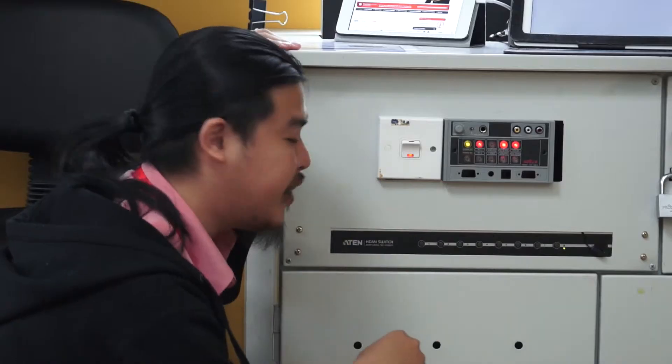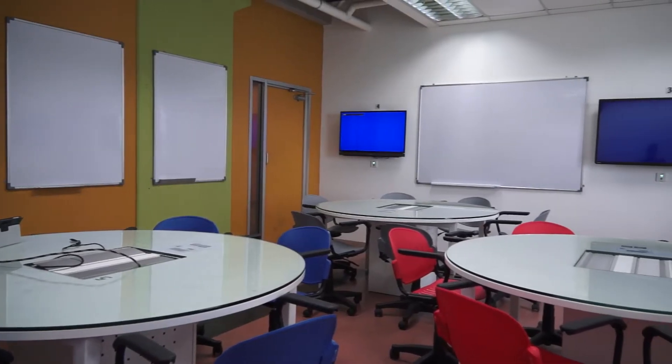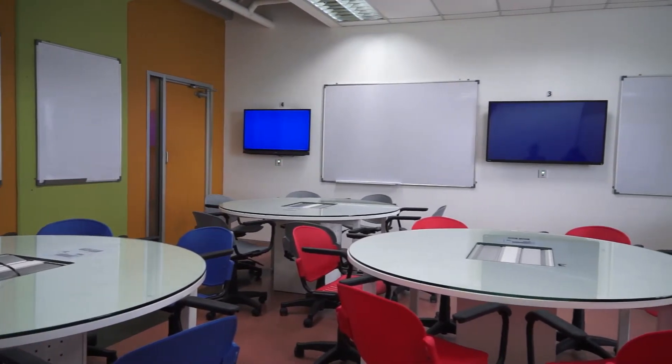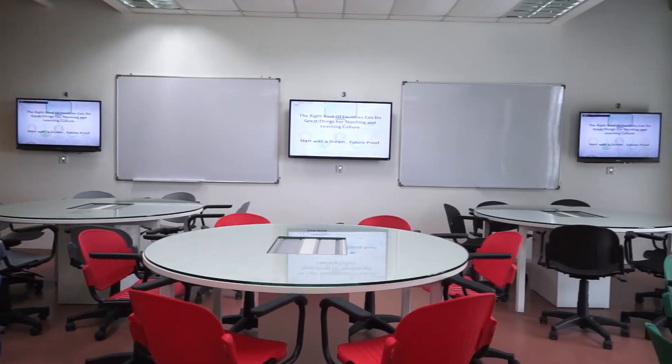This is considered the heart of the XSpace. It's the lecturer's console table. It has all the control buttons that a lecturer needs to control the presentation projection to the main screen. For example, if I would like to project what is being presented at table 5, I just press number 5 over here. By pressing number 5, you can see the whole screen will be changed, and table 5's presentation is being projected to all of the room.